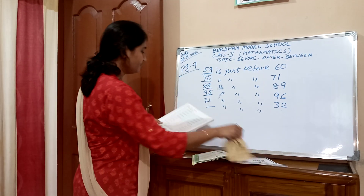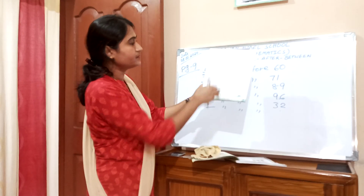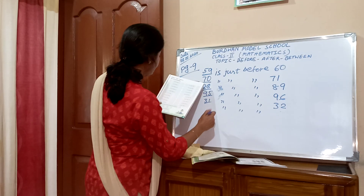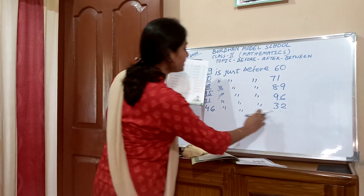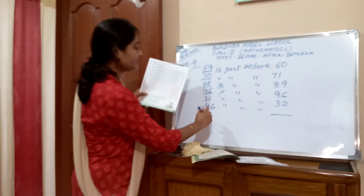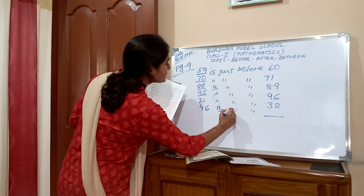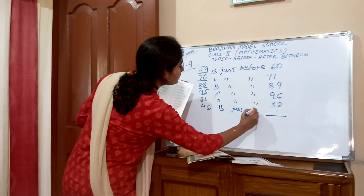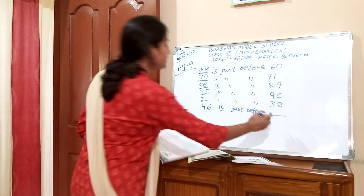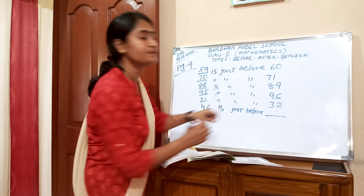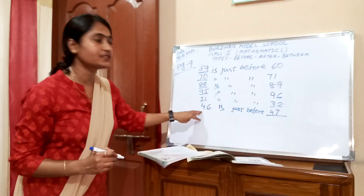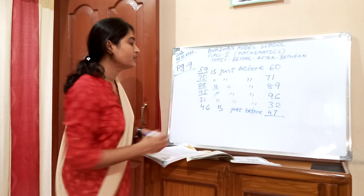Okay. First, we will solve this. Here, 46 is just before dash — 46 is just before 47. And 47's just before number is 46, so 46 is just before 47.